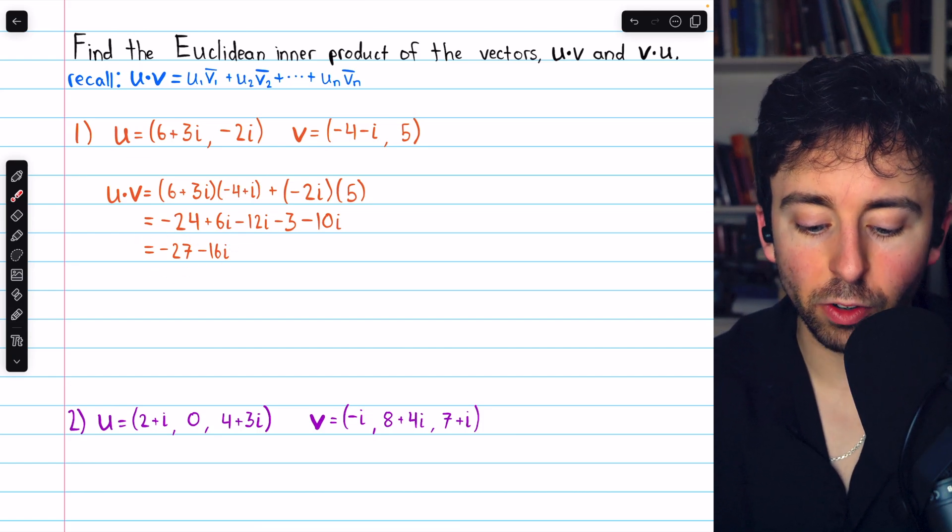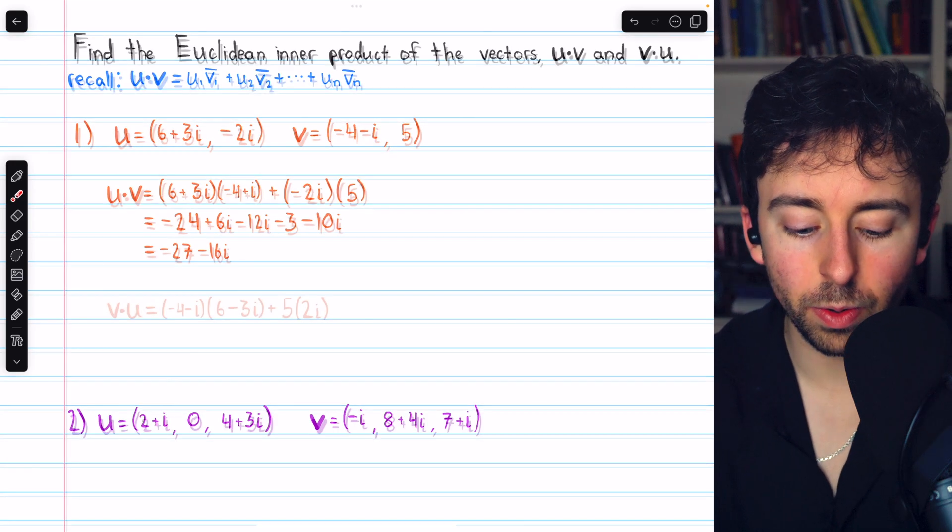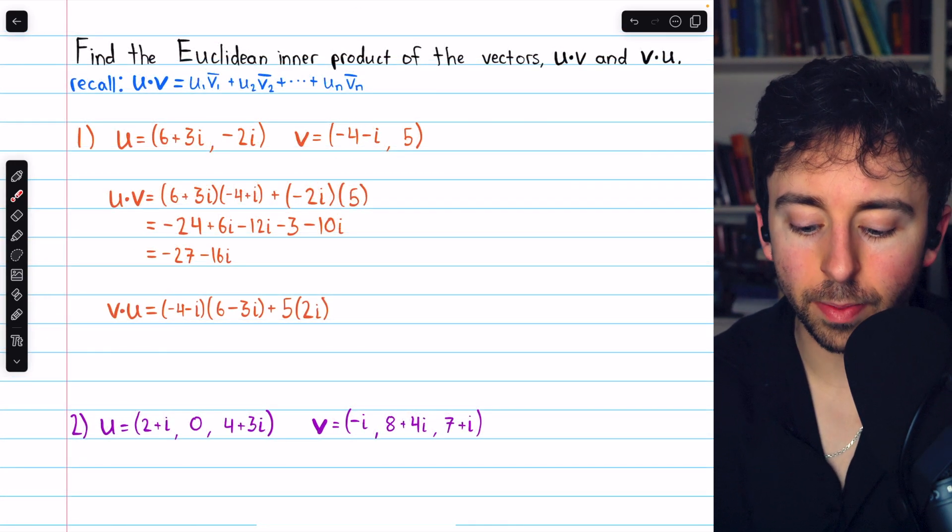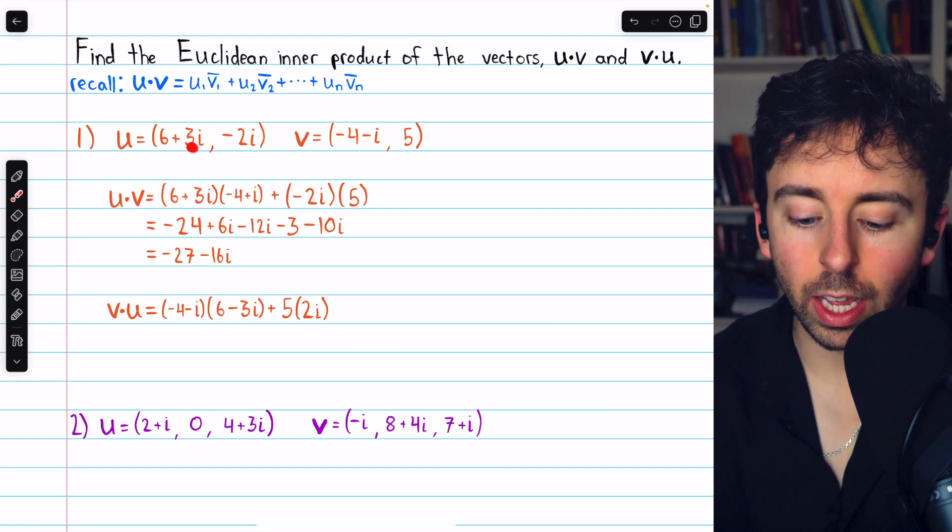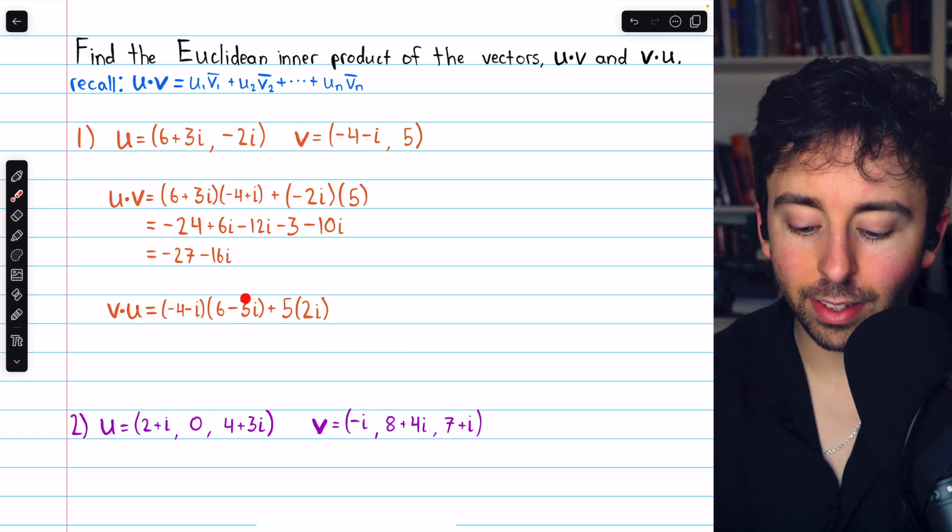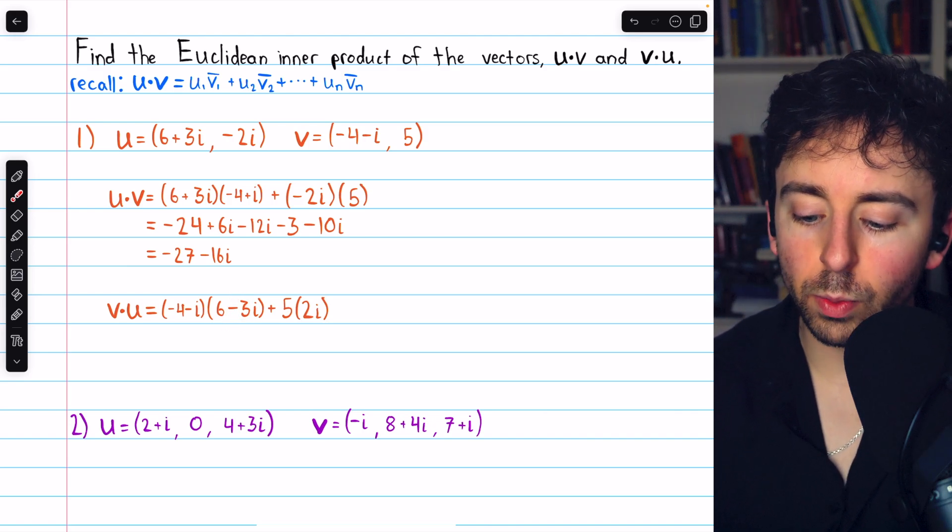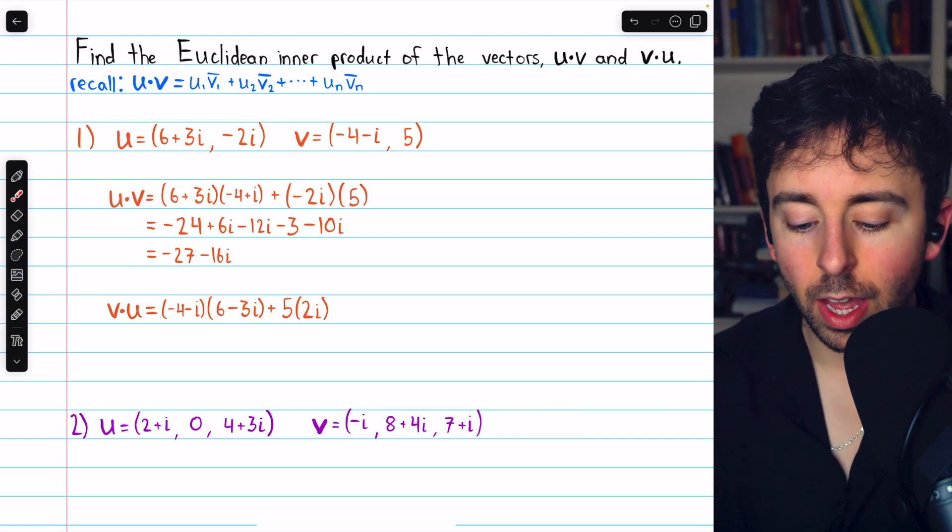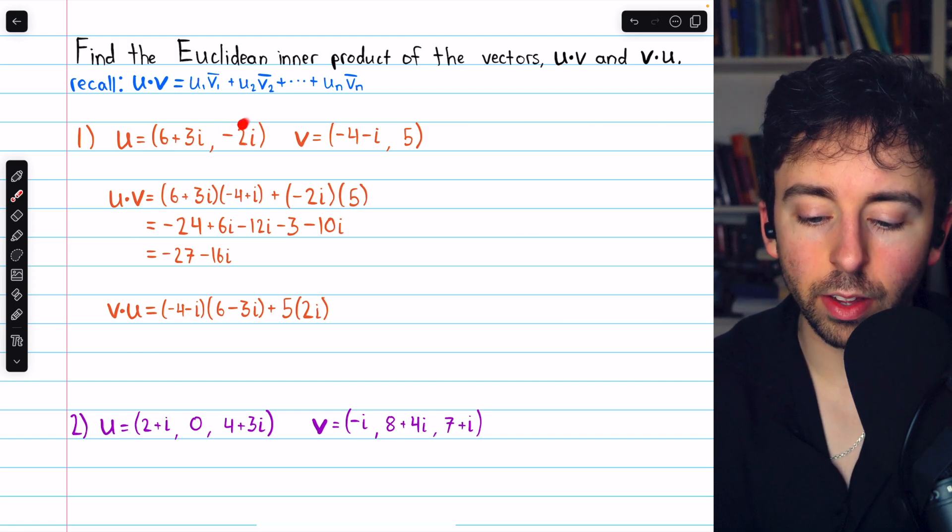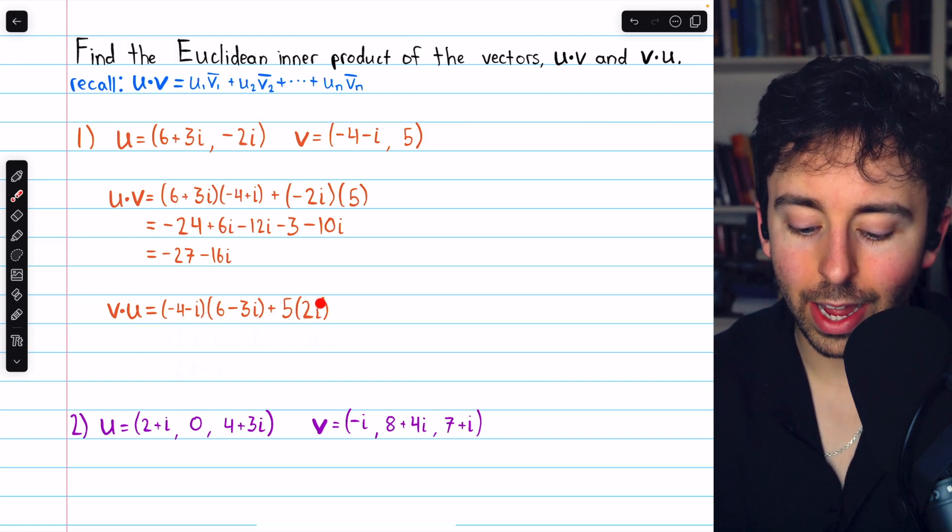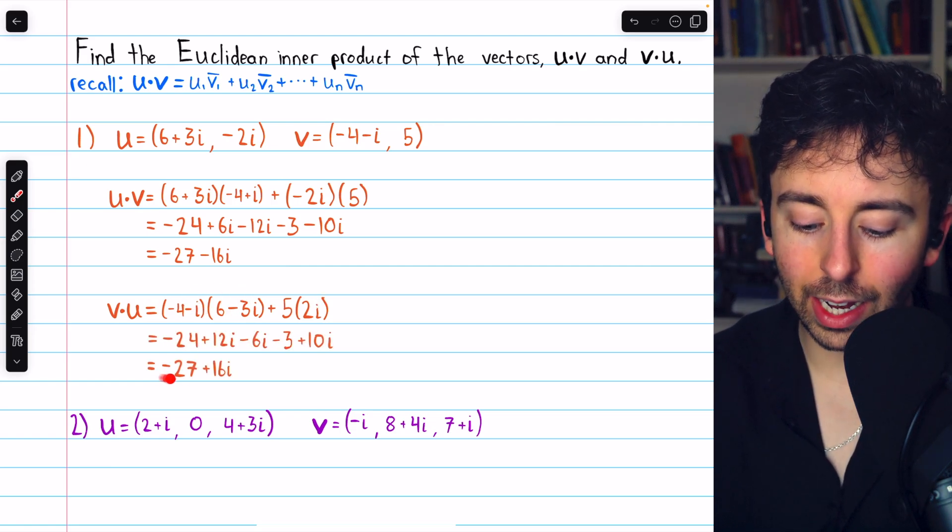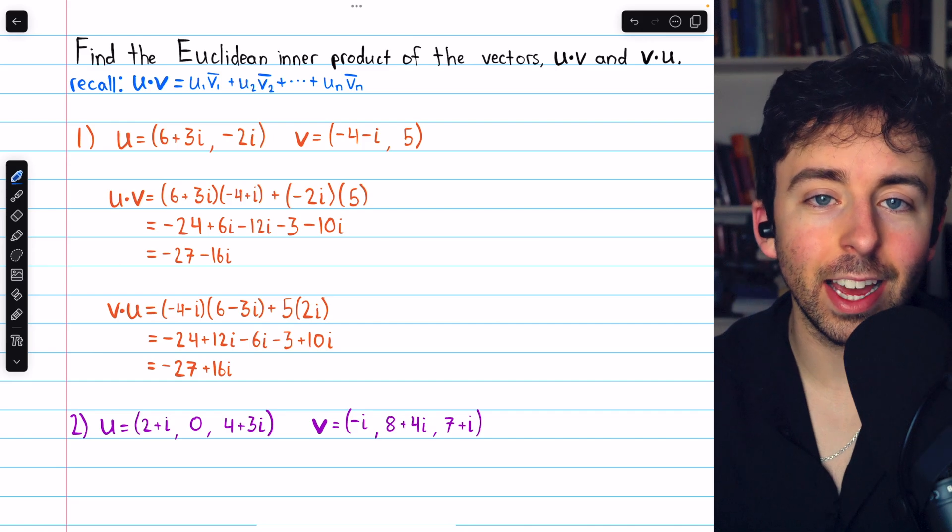Now let's go the other direction and compute v dot u. By definition, v dot u consists of the first component of v multiplied by the conjugate of the first component of u. The conjugate of six plus three i is six minus three i. Then we take the second component of v, which is five, and multiply by the conjugate of the second component of u. The conjugate of negative two i is positive two i. Doing the distribution and then simplifying, we have negative twenty-seven plus sixteen i.